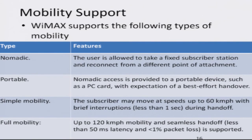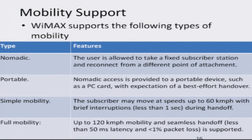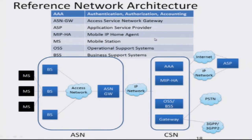WiMAX also supports a variety of device mobility scenarios. Nomadic devices are practically not mobile except over an extended period — such as a desktop or a fixed base station. Portable devices are mobile but not moving at high speed — such as a laptop used at a fixed position for a couple of hours. Simple mobility covers mobile phones in cars moving at speeds up to 60 kilometers per hour or less. Full mobility supports devices such as laptops or mobile phones on high-speed trains, up to about 120 kilometers per hour.